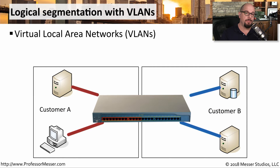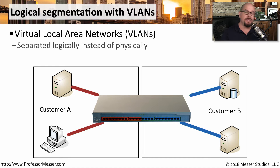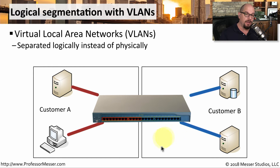One way to maintain this separation but have efficiency in the number of devices is to separate these two customers by VLAN — virtual local area networks. Instead of physically separating these customers, we're logically separating them. There's still a separation of networks on this single switch, but customer A is on one VLAN and customer B is on the other VLAN. Even though these two customers are on the same physical switch, the two VLANs cannot communicate to each other.